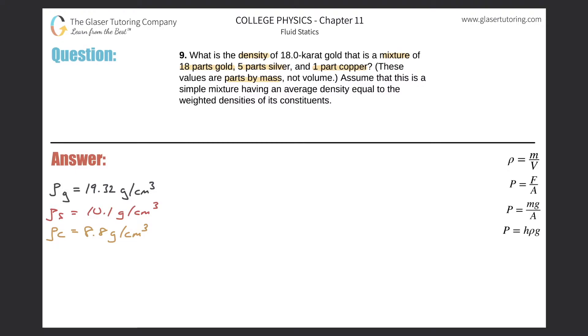So let's assume that this figure of 18 karat gold right here, this is the 18 karat gold. Let's pretend this thing weighs 24 grams. So why did I choose this number?